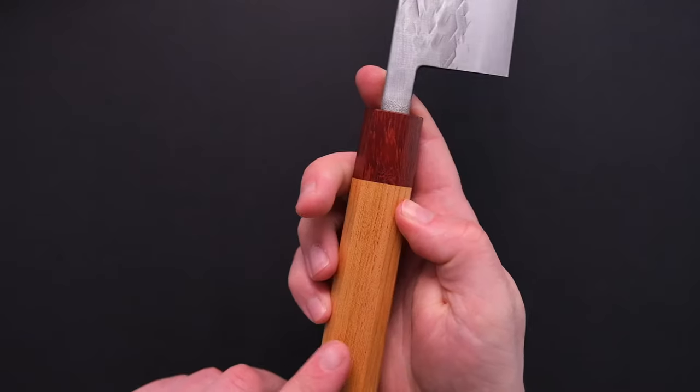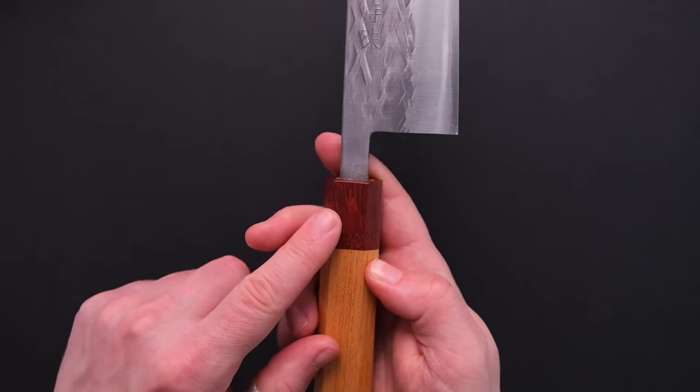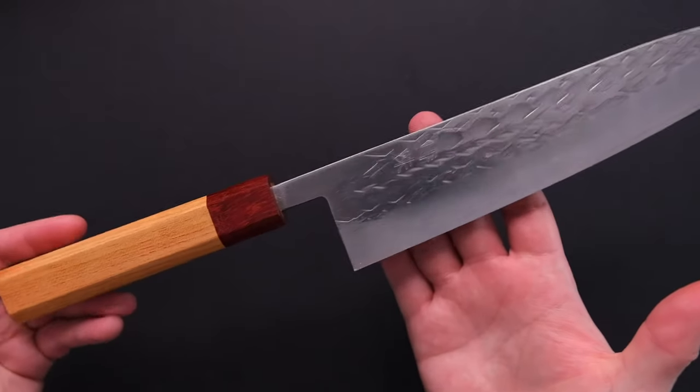The octagonal handle is made out of Japanese Zelkova with a Padauk ferrule. Let's see how this knife performs out of the box.